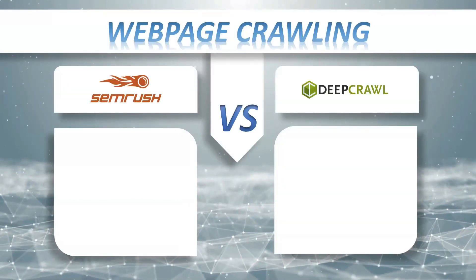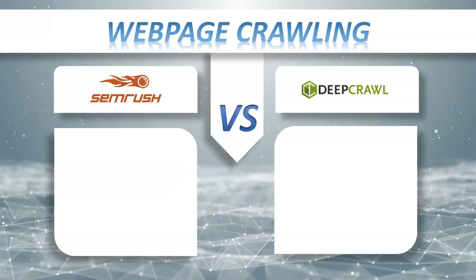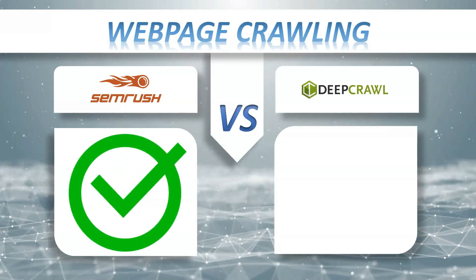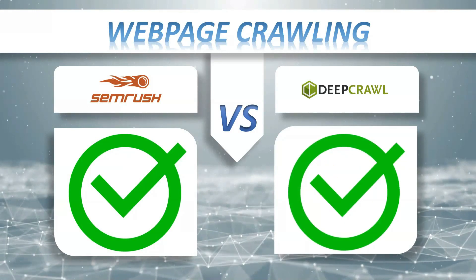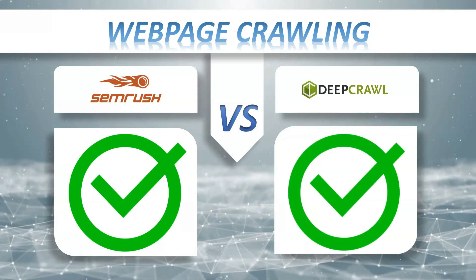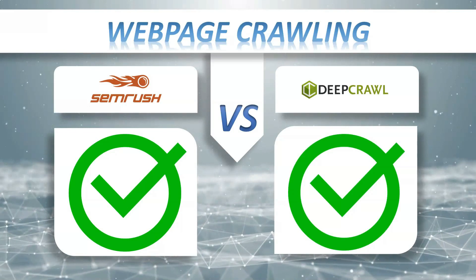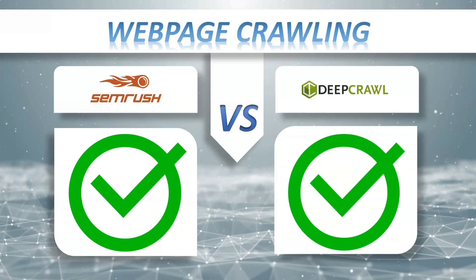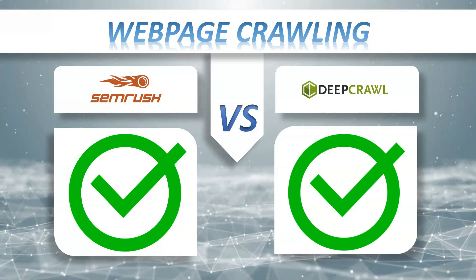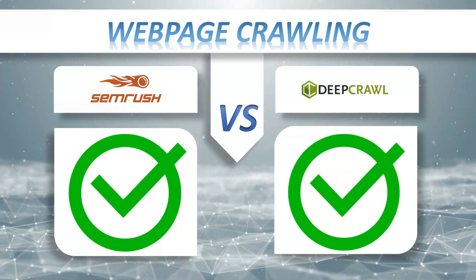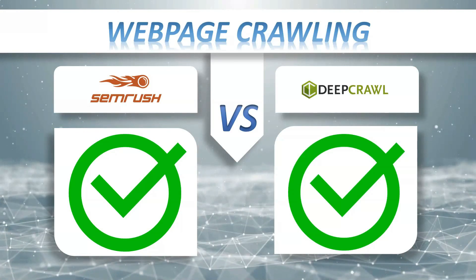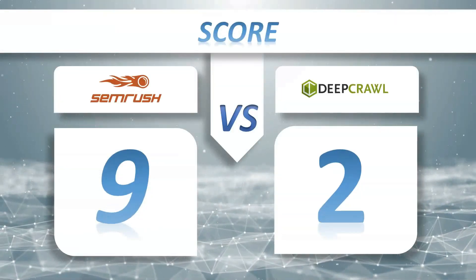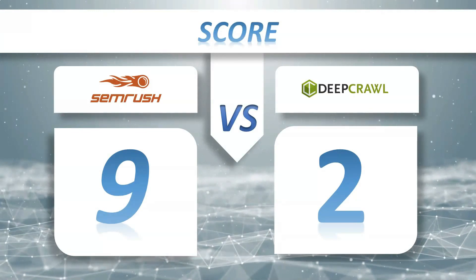Web page crawling: SEMrush yes, DeepCrawl yes. It crawls all the pages it finds on your website, then provides an overall SEO health score, visualizes key data in charts, flags possible SEO issues, and provides recommendations on how to fix them. So let's see the score: SEMrush 9, DeepCrawl 2.